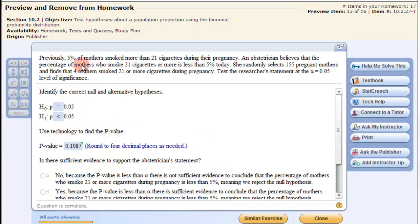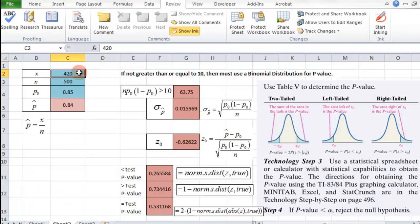Let's look at one last one here. Previously 5% of mothers smoked more than 21 cigarettes during their pregnancy. An obstetrician believes that percentage of mothers who smoke 21 cigarettes or more is less than 5% today. She randomly selects 155 pregnant mothers and finds that 4 out of them have smoked 21 or more cigarettes during their pregnancy. Test the researcher's statement at a 0.05 level of significance. So we have 155 for n and we have 4 for our x value. Then our p-naught is 0.05, 5%.